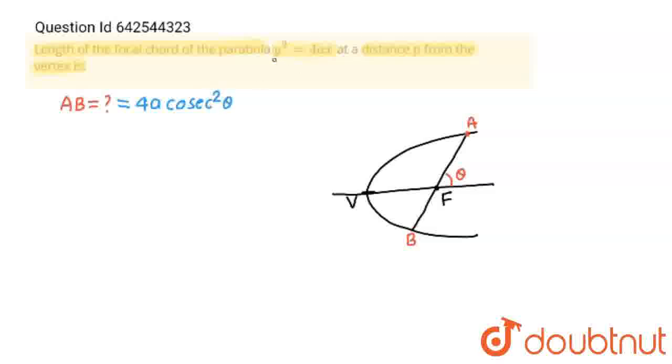And for the parabola y squared equals 4ax, we have to find cosec theta. See, what I am going to do? I am going to make a perpendicular on AB.